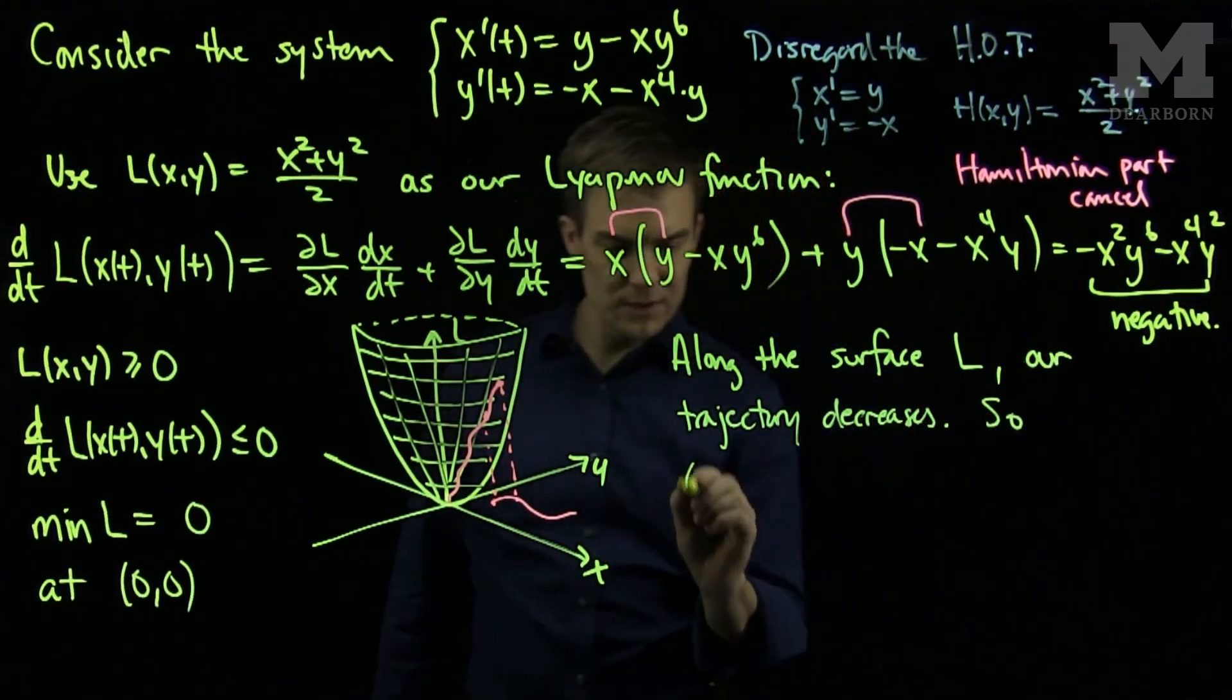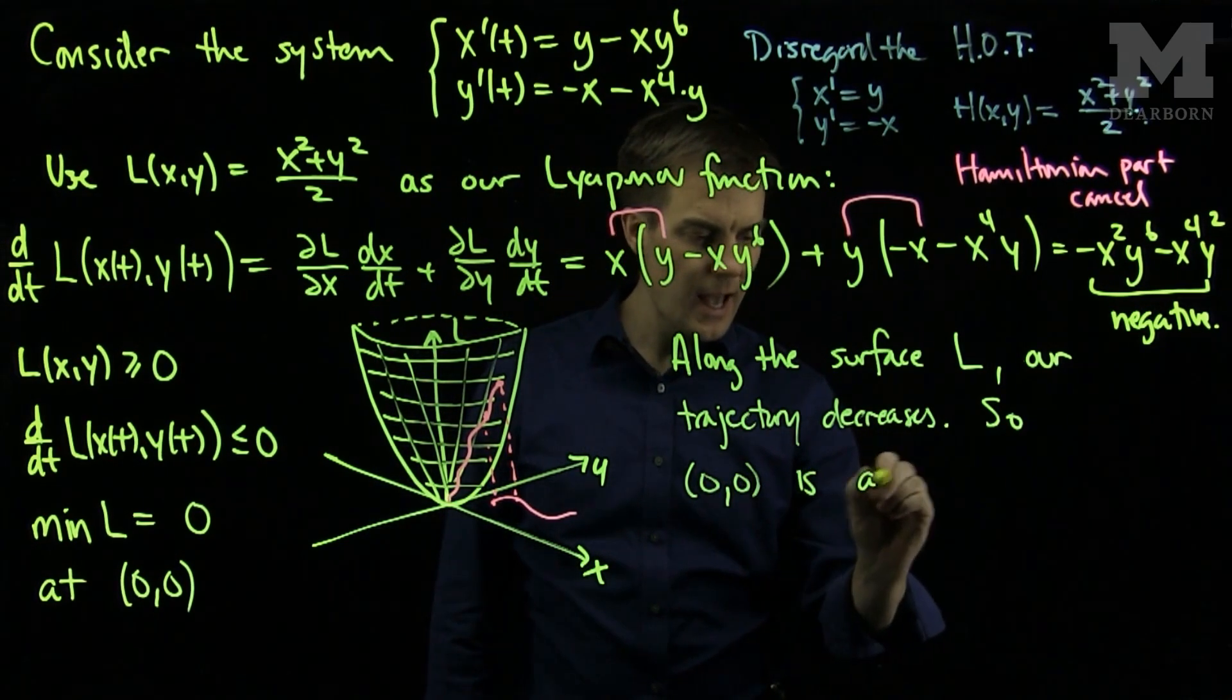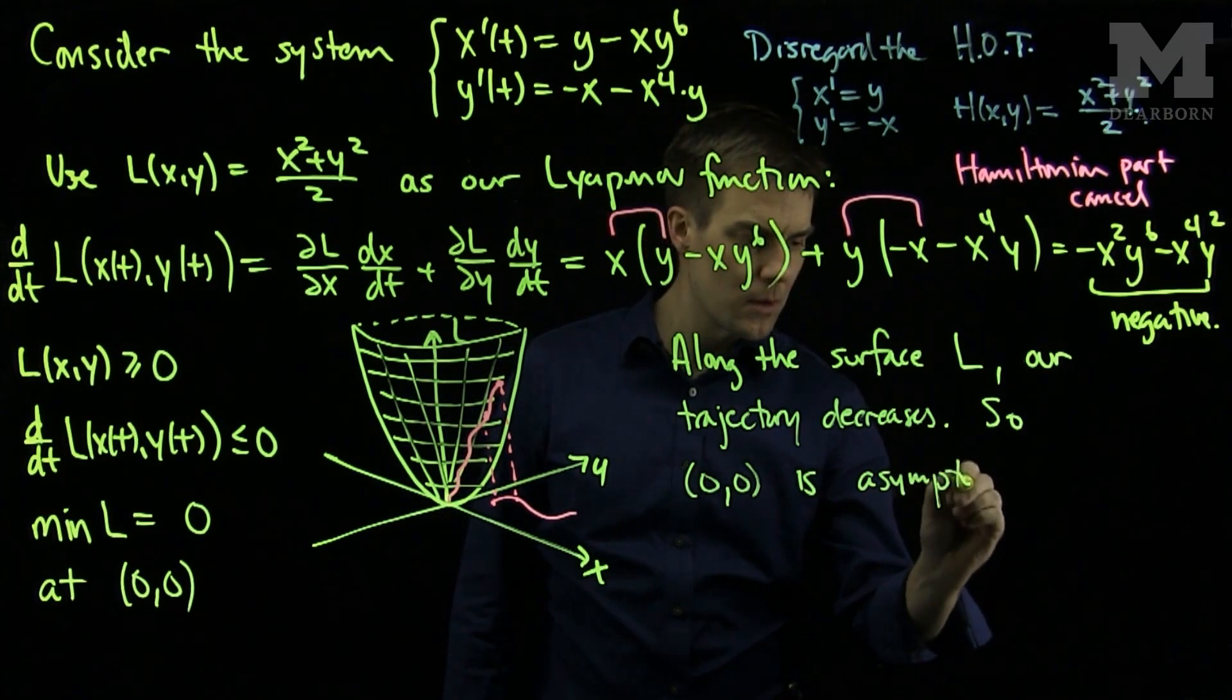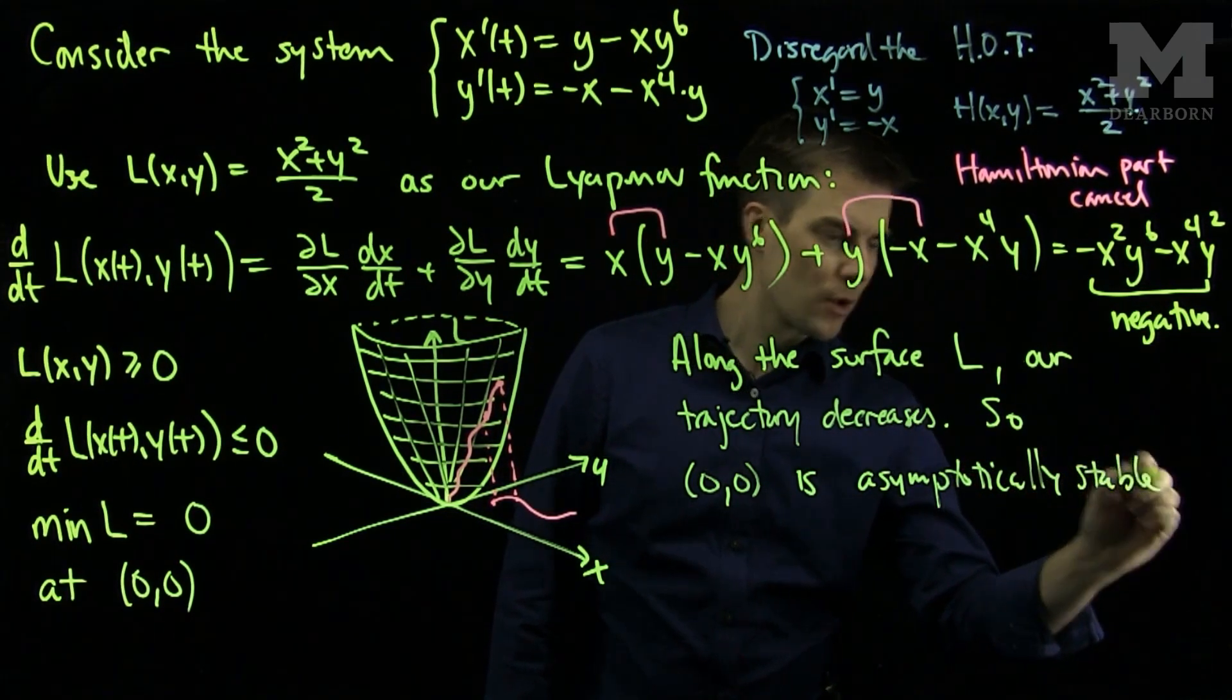So, zero, zero, the origin, is an asymptotically stable critical point.